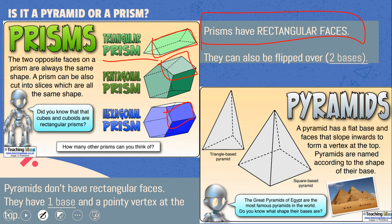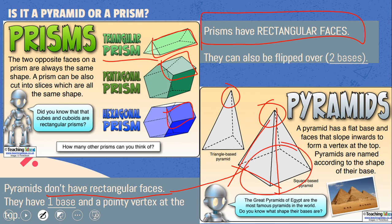Now, pyramids, they have this little pointy bit at the top, and they always have a flat base. And they have the pointy bit, which is a vertex at the top, and they do not have rectangular faces. So most of the time, they will have triangle faces. But they can have other faces as well, but most of the time they're triangle. And they always have, like I said, the one base at the bottom.